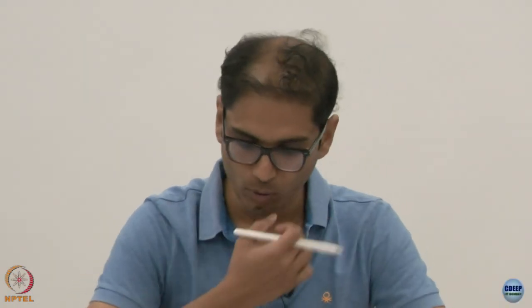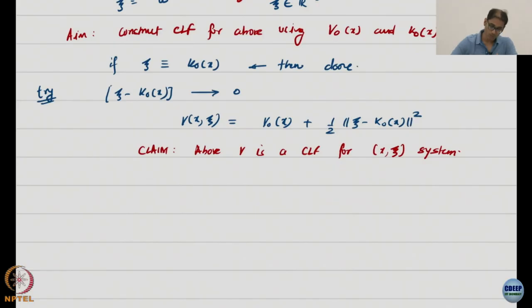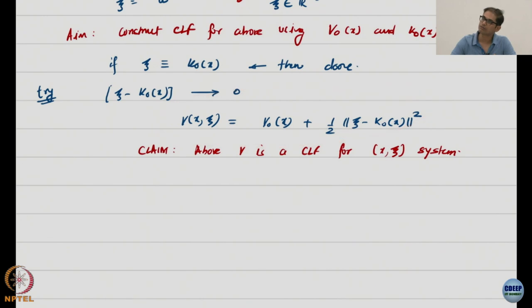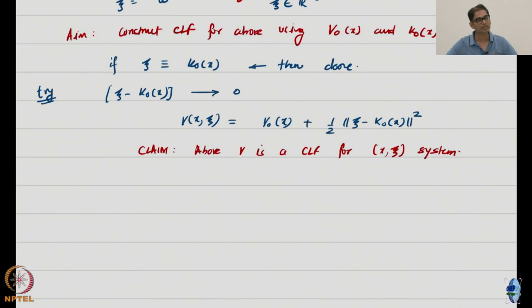So, this is what we want to do. We want to try this out as a Control Lyapunov Function for the new system. The purpose of backstepping is to come up with a Control Lyapunov Function — everything else after that is straightforward.